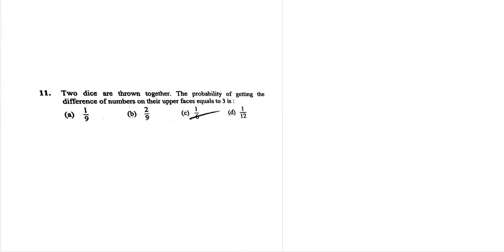Two dice are thrown together. The probability of getting the difference of the numbers with the upper face is equal to 3. First die shows a number which is 3 higher than the second, so there are three possibilities: 1, 2, 3.